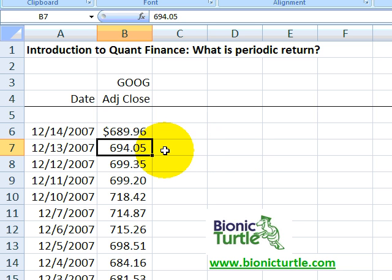$694.05. So this is raw data that I pulled from Yahoo Finance, and I want to convert that into periodic rates of return. Okay, how do I do that?